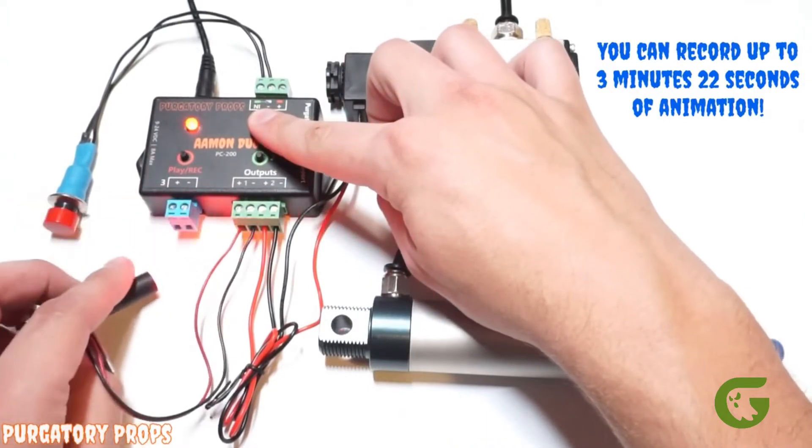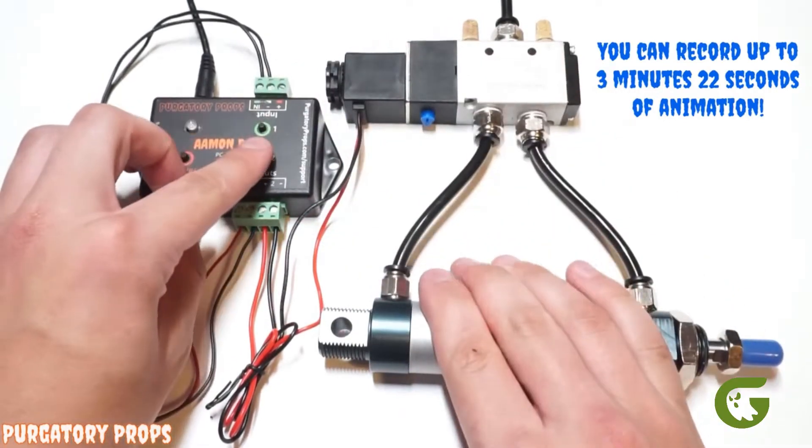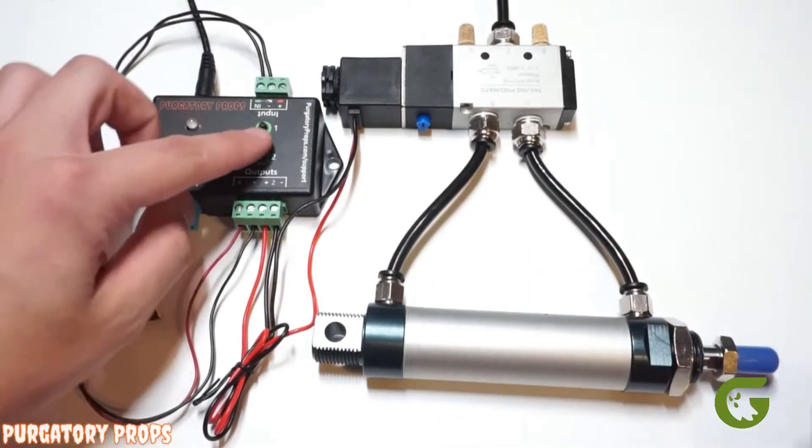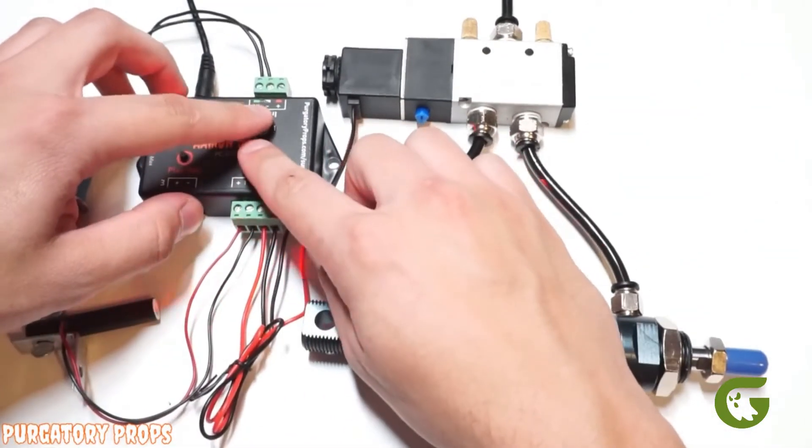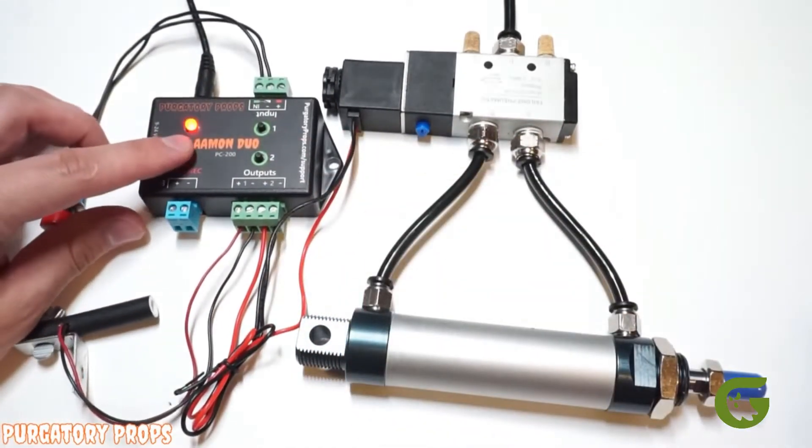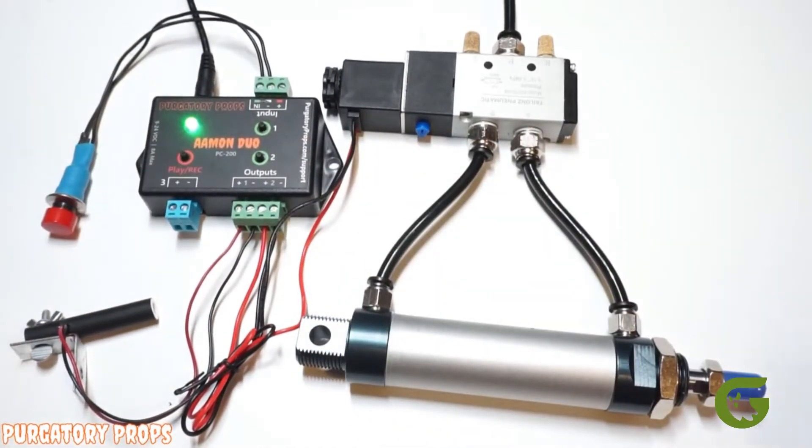So if I release this, the LED will start flashing which means it's recording. Pressing one turns on that LED and two extends that air cylinder. So you can do that any combination you want until you're happy with your animation, then press play record again to stop recording.